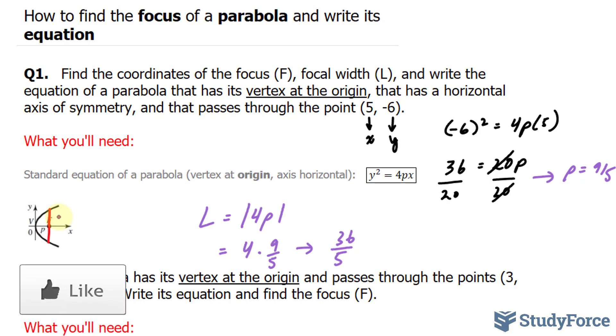The coordinates of the focus is simply your p value at 0. So, our p is 9 over 5, that's 0. So this is our focus F, this is our focal width, and our p value is 9 over 5.